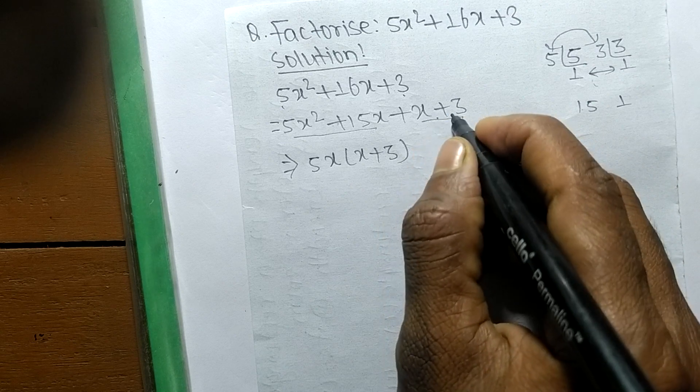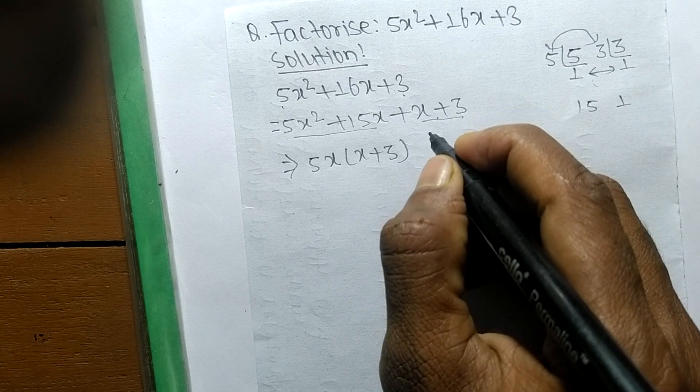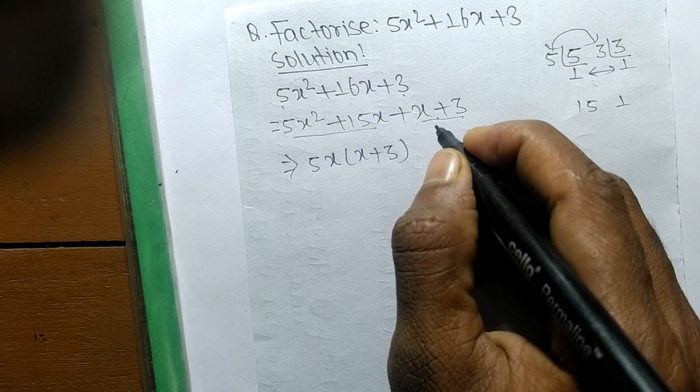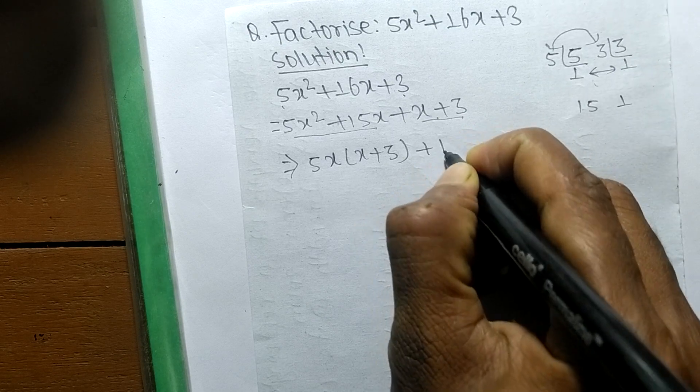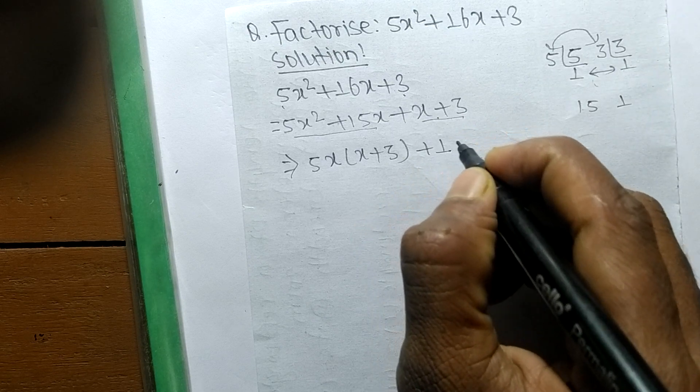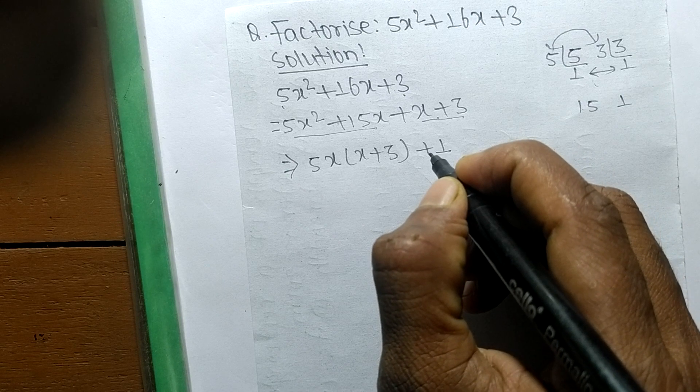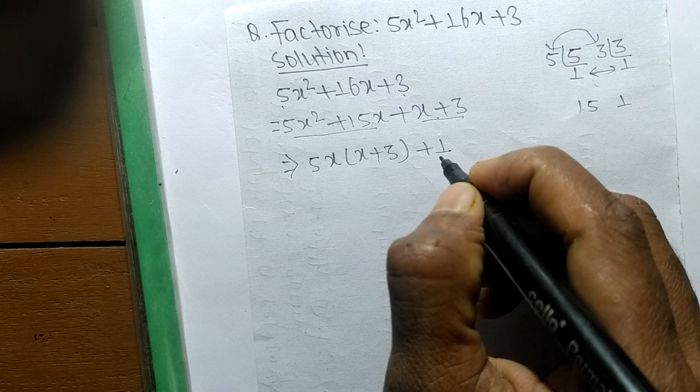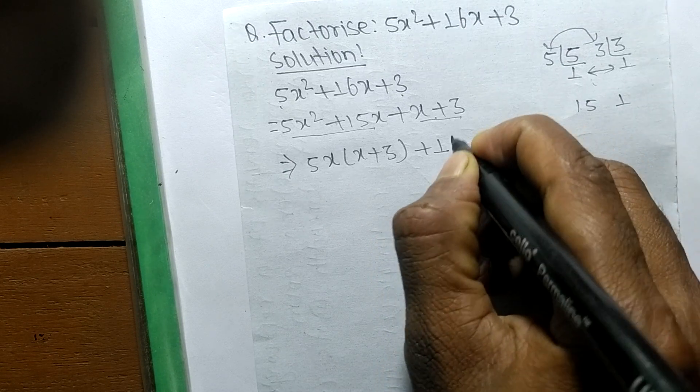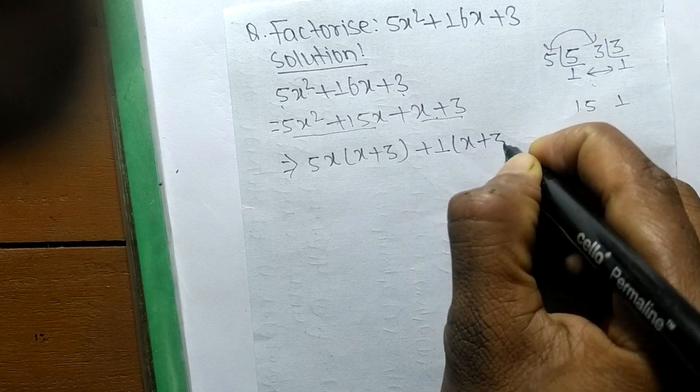In the second pair, there is no number or variable in common, so in that case the common here becomes 1. If there is nothing common, the common automatically becomes 1. So the remaining is the same, x + 3.